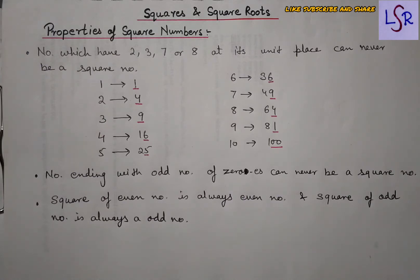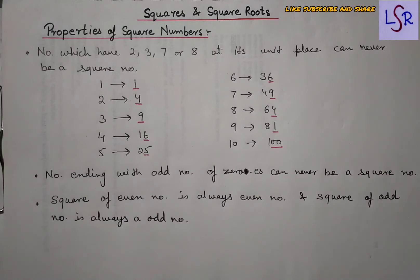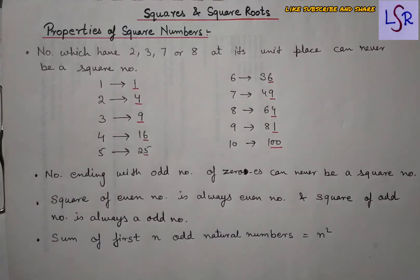The next property: the square of an even number is always even, and the square of an odd number is always odd. This means if you take the square of any even number, your answer will also be even, and in the case of odd numbers, you will get an odd number.